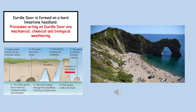The third landform you need to know is Durdle Door, perhaps the most famous landform along the Dorset coastline. Durdle Door is an example of an arch, formed on a hard limestone headland. It formed as a result of a cave being widened and deepened over time through processes such as hydraulic action and abrasion, until eventually the cave broke through the headland to form this natural arch. Processes acting on Durdle Door include a range of weathering types: mechanical, chemical, and biological.